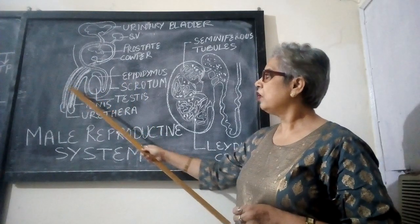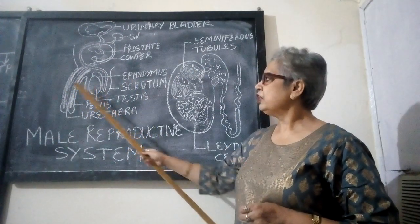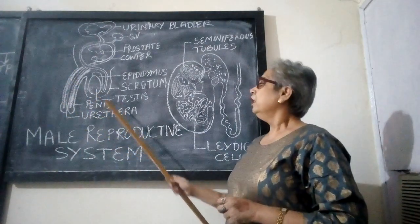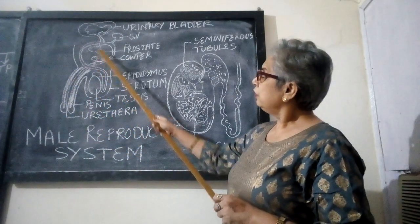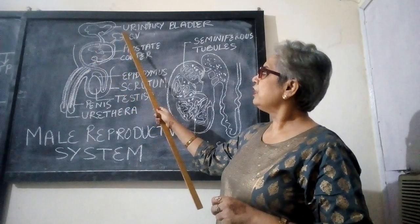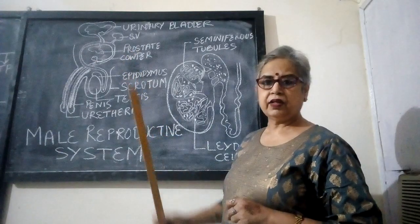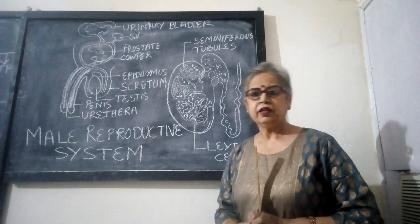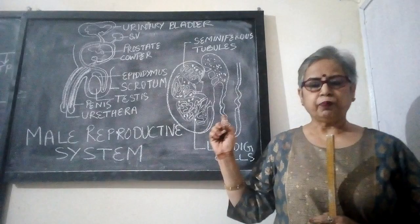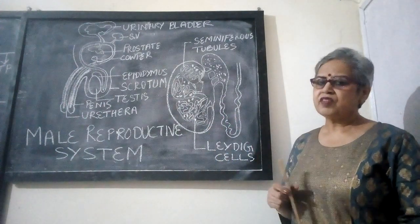The urethra is covered by the muscular penis, which has a very rich supply of blood. The sperms mix with the secretions of the seminal vesicles, prostate gland, and Cowper's gland, and this mixture — that is, sperms combined with the secretions of those glands — is called semen.